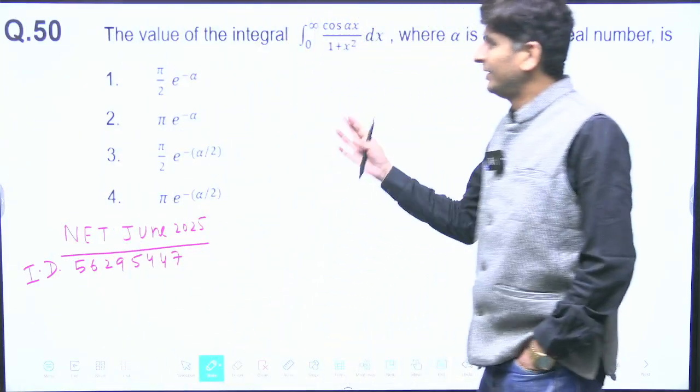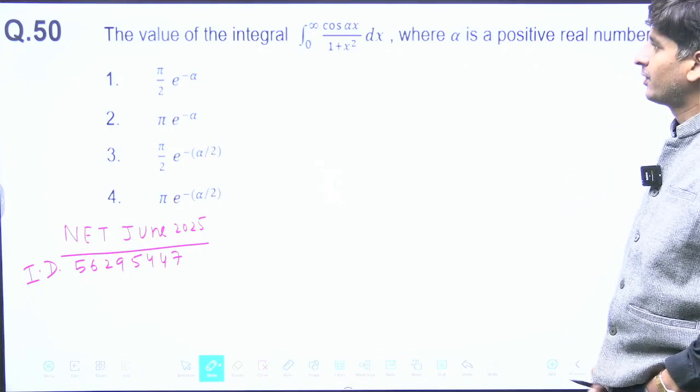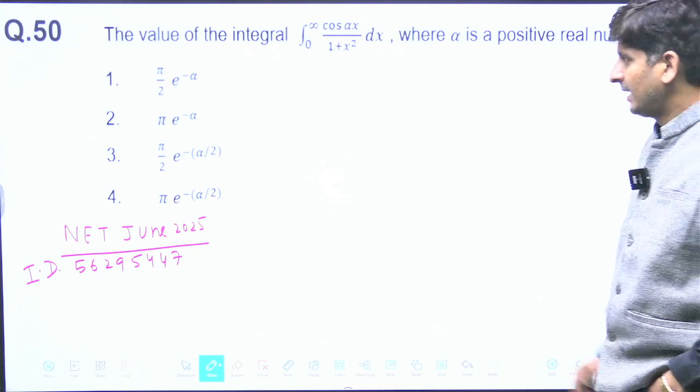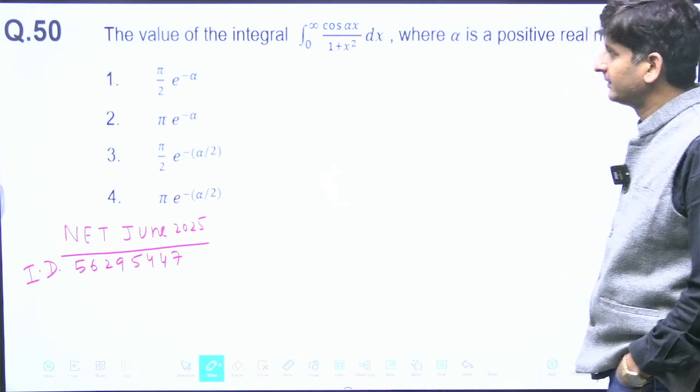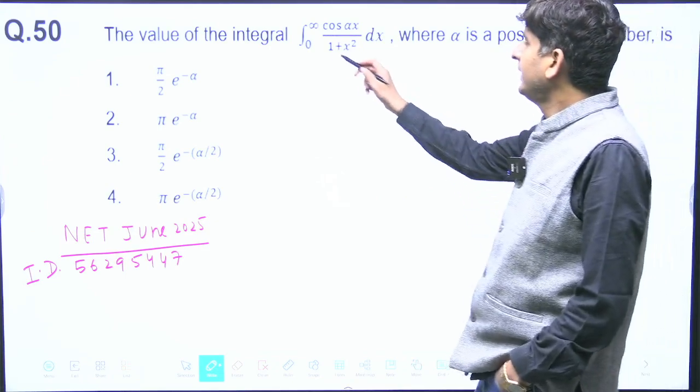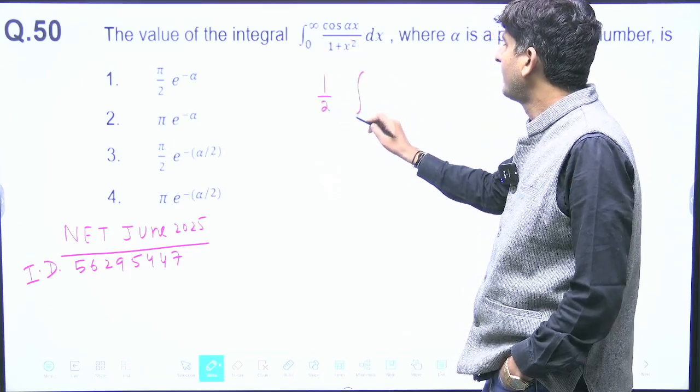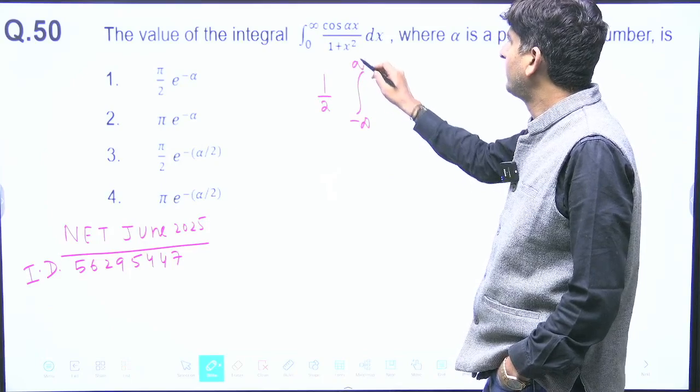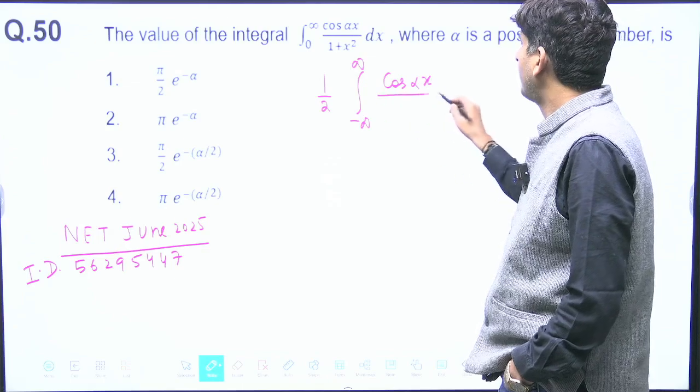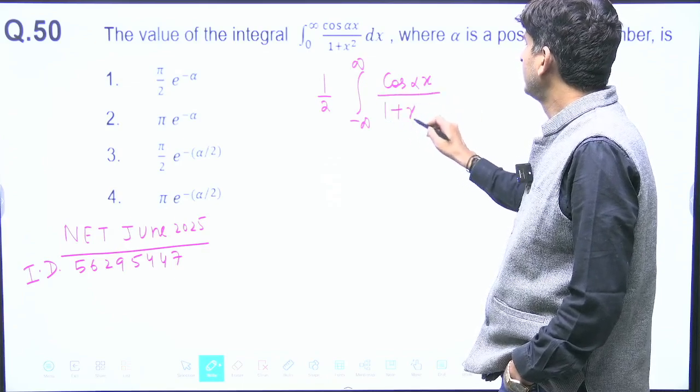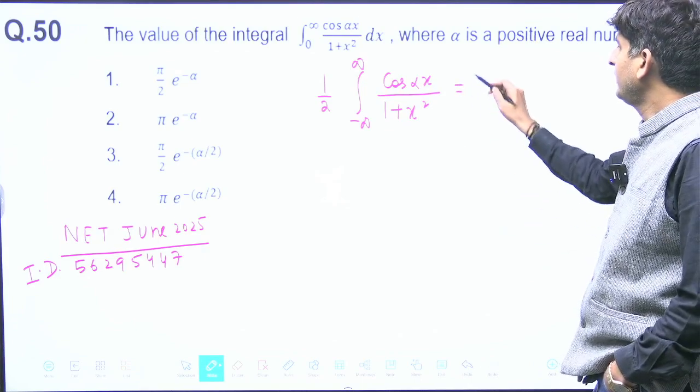Hello students, this question was asked in June 2025 from complex analysis, a straightforward integral that I teach in the class of Fourier integrals. The integral is 0 to infinity. The first step: write it as half of minus infinity to plus infinity cos(alpha x) / (1 + x²). Second step: write half real of minus infinity to plus infinity e^(i*alpha*x) / (1 + x²).